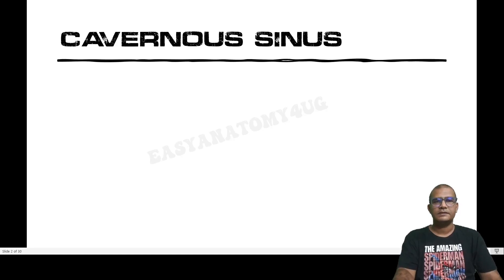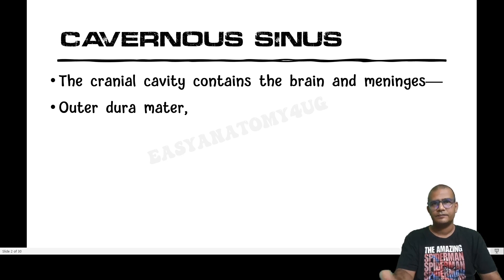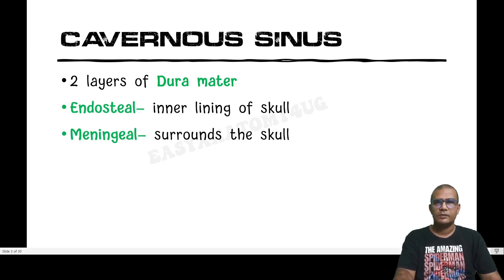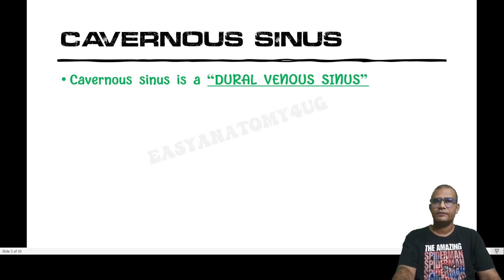Let us start with the discussion on cavernous sinus. The cranial cavity contains the brain and meninges. The brain is covered by three meninges: outer dura mater, middle arachnoid mater, and innermost pia mater. There are two layers of dura mater — the outer endosteal layer, which is the periosteum of the cranial cavity, and the inner meningeal layer covering the brain. At certain places, these layers enclose a space filled with venous blood, known as dural venous sinuses.